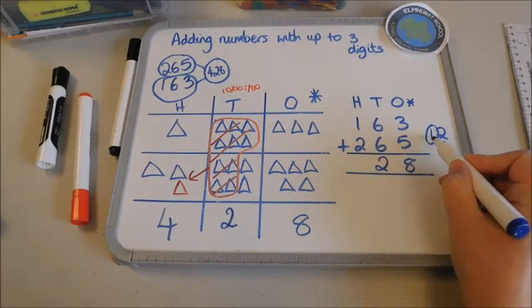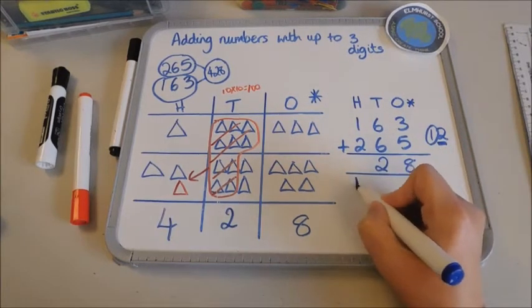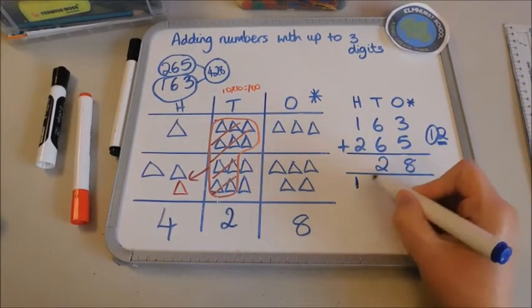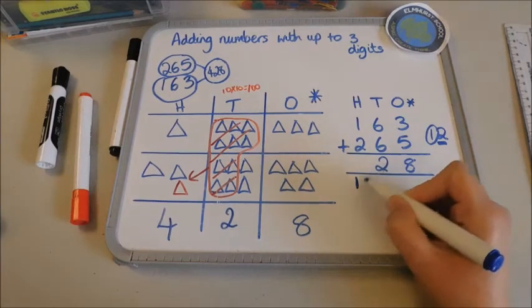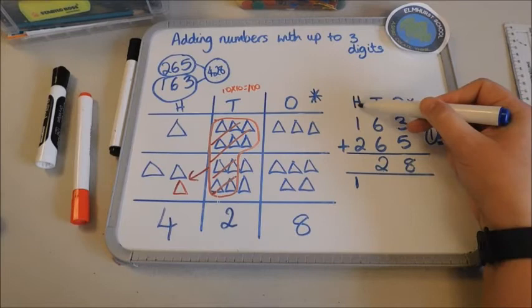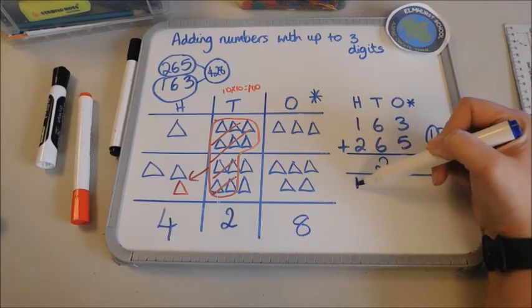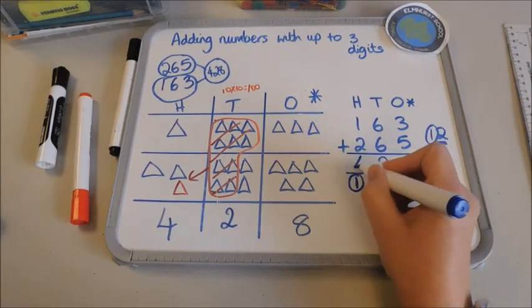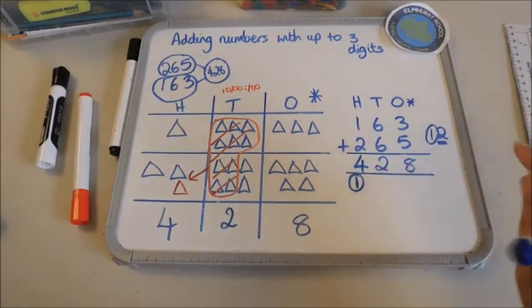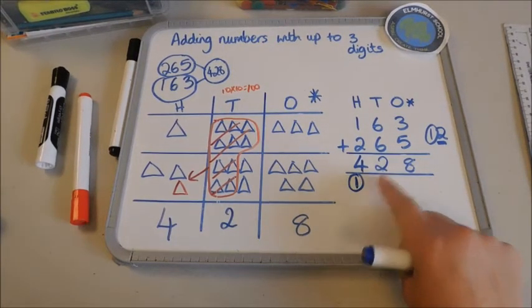We're going to put it under here. So there's my 12, I've just exchanged it. And now I can add my hundreds. So one add two is three plus this one down here which is really important is four. And you'll need to check with your children because sometimes they forget to add this one on. So you can see here that my answers match up.